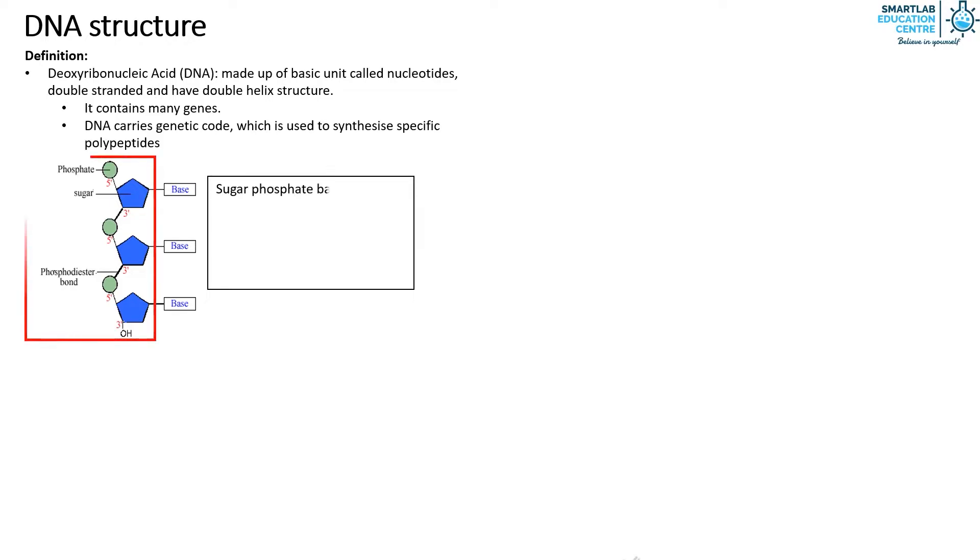The sugar phosphate backbone of DNA, which is the red box, refers to the phosphate and sugar, which is deoxyribose as this is DNA. The nucleotides are joined together by phosphodiester bonds.